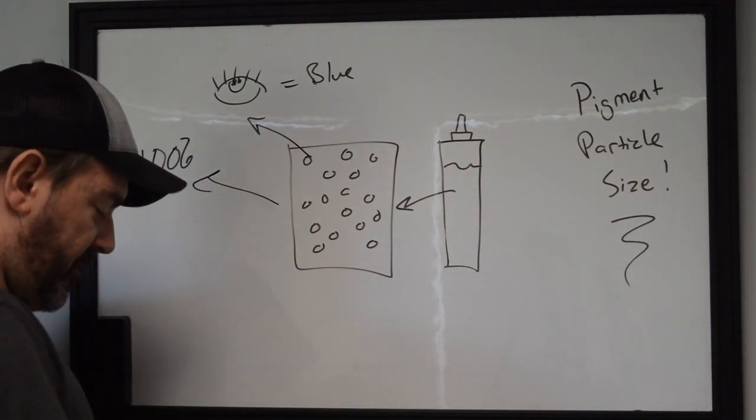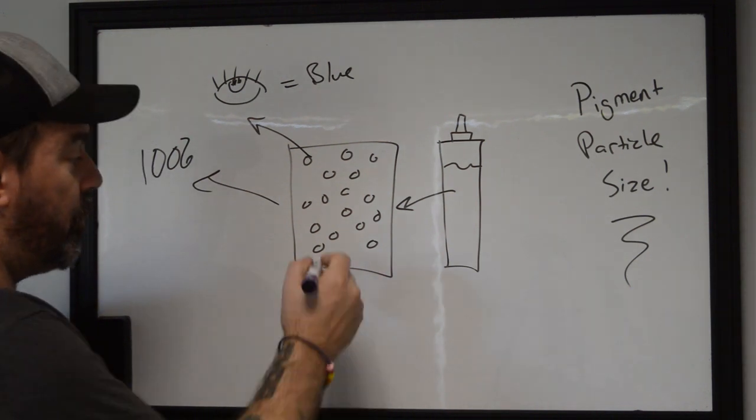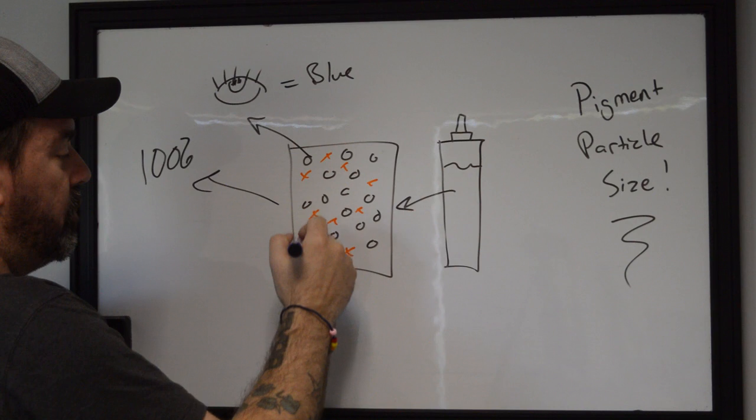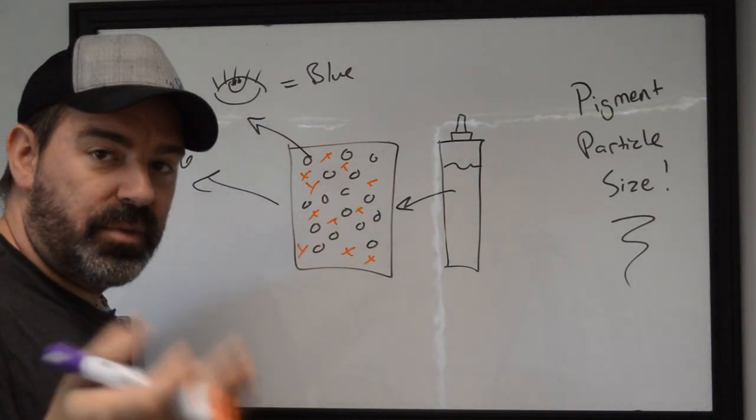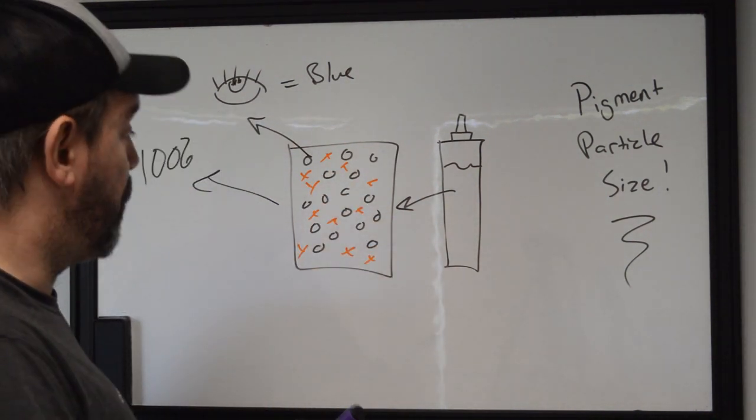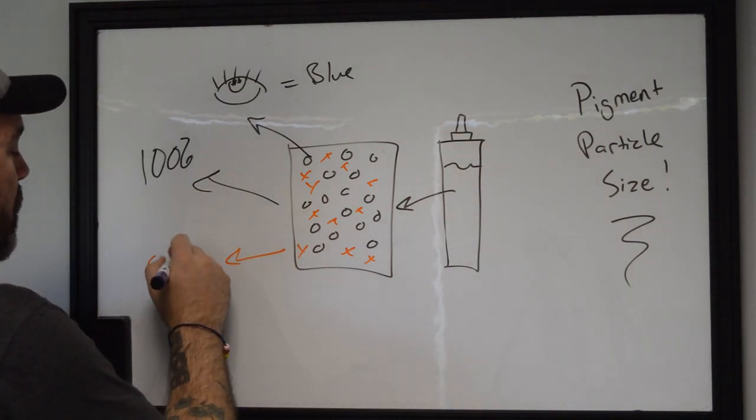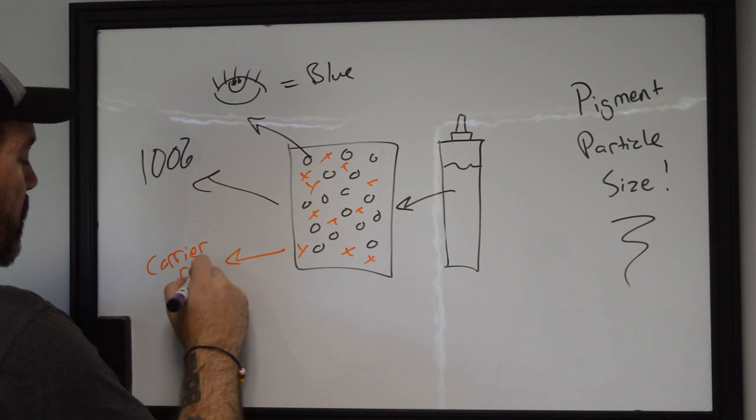You need something that's going to be able to carry the particles of pigment in a dispersed state into the substrate you're trying to put it into. That's where we have a carrier fluid. All of this other stuff that's around it would be water, biocidal agents, performance enhancers in some of the brands that are out there. That's all your carrier fluid for the pigment.